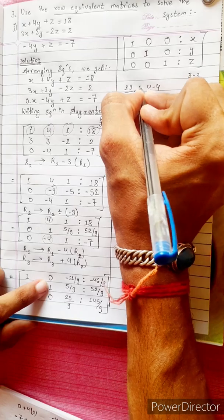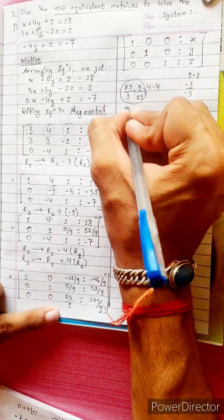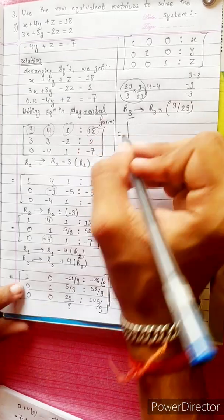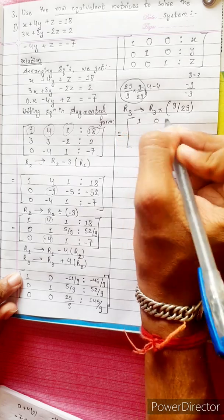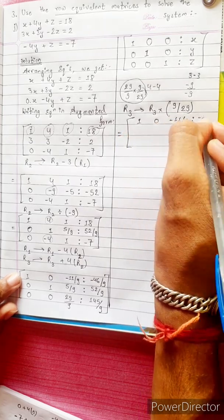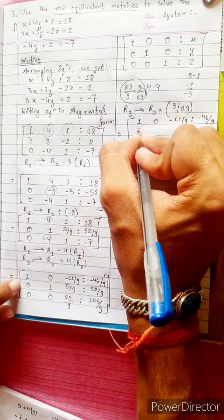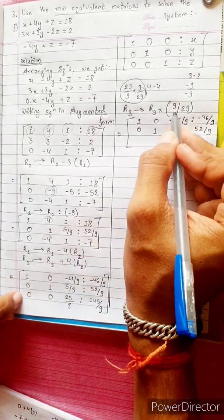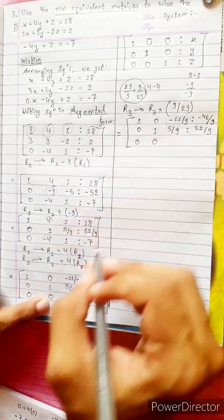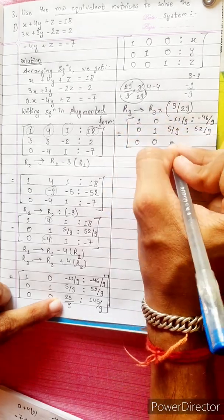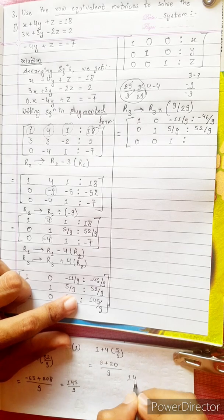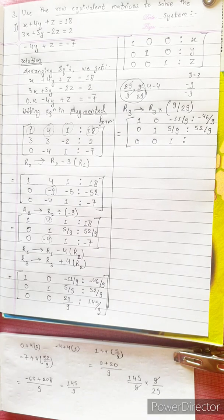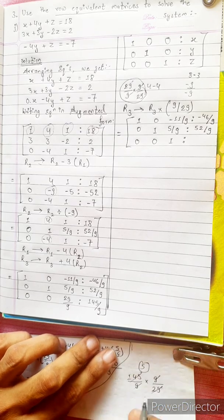29 divided by 9, multiply by 9 by 29; the 9s cancel, the 29s cancel, giving 1. R3 changes into R3 multiplied by 9 by 29. 145 divided by 9 times 9 by 29; the 9s cancel, giving 145 divided by 29 equals 5.